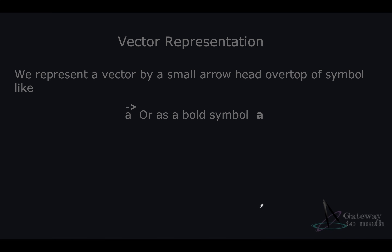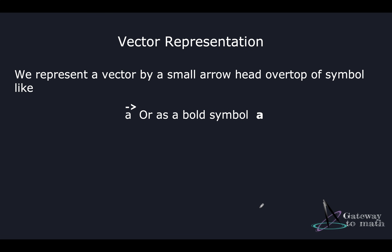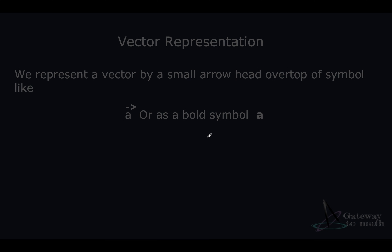So how do we represent a vector? Vector representation is majorly done in two ways — either you can have an arrowhead on top of the symbol, or you can have a bold representation. Either way is fine, whatever works for everybody.